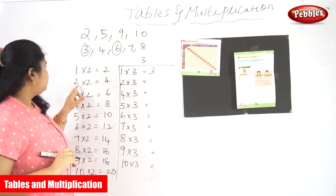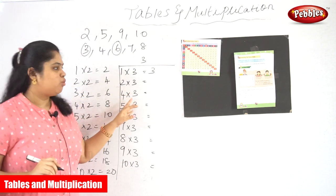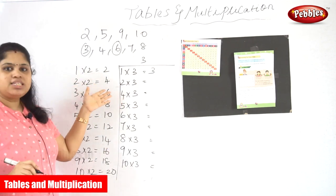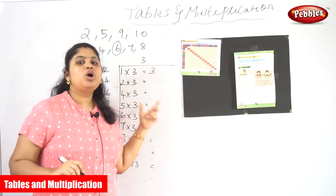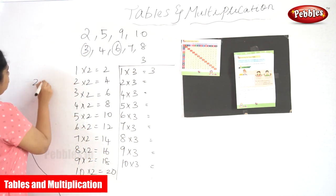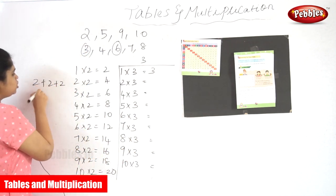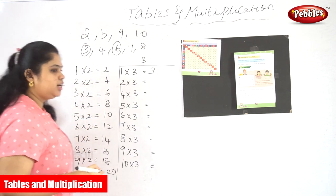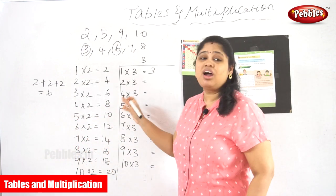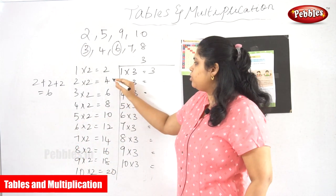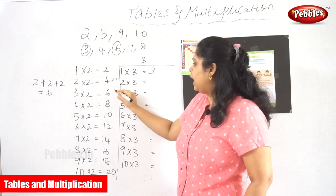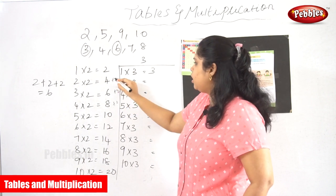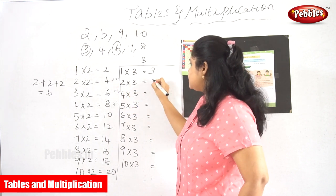See here: 2 into 2 is equal to 4. If 2 comes 2 times, the answer will be 4. If 2 comes 3 times — 2 plus 2 plus 2 — that's 6. So what is the process of the third table? We want to count extra 2 numbers from the second table; we add 2 numbers. See here: 4 plus 2 is 6, isn't it?